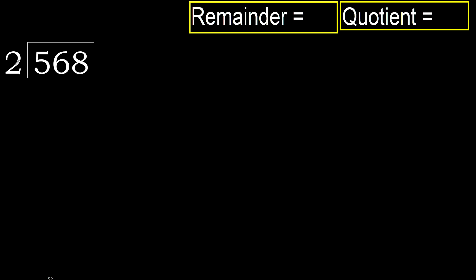568 divided by 2. 5 is not less, therefore with 5 — 2 multiplied by which number is nearest? 2, 5 but not greater. 2 multiplied by 3 is 6.